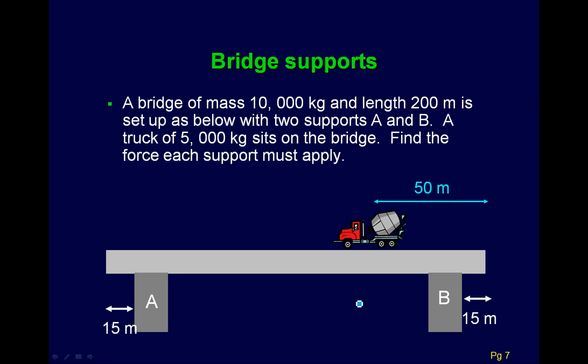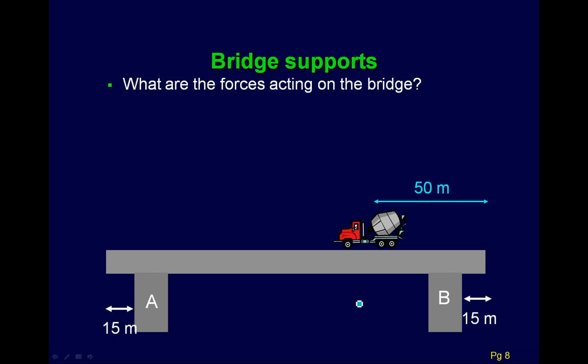So here's our first example. And here we have a bridge with two supports that has a dump truck parked on it. And the idea here is you want to find what the supports are, FA and FB. So, you know, if you were an engineer or something, you might want to find out what those supports, how much force they'll have to hold in order to do something like this.